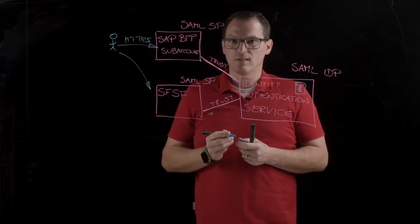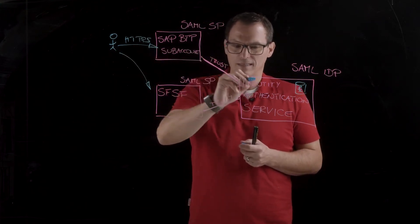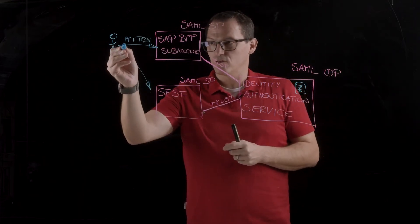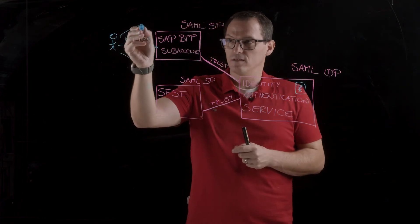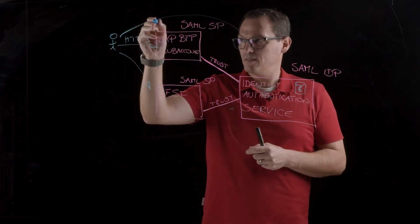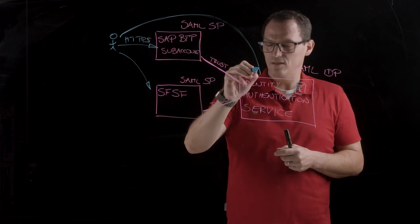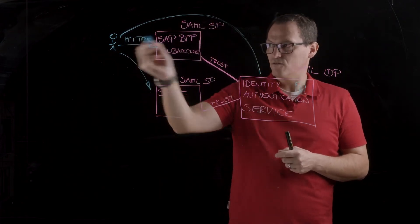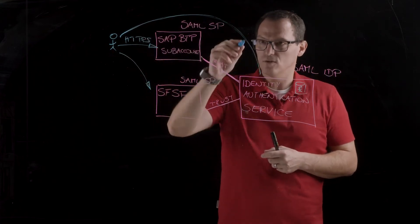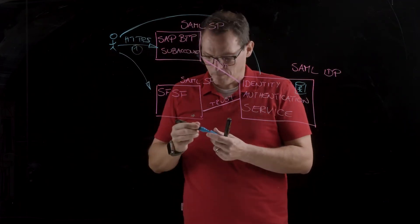And if you access the system, you need to be authenticated. And this authentication is not happening here, but it is delegated to the identity authentication service, so to the identity provider. Therefore, in the first step, you will be redirected to the identity authentication service. So, you have a redirect here, but this is not directly done from the front-end. It is done by the sub-account that you would like to access. So, it redirects you in the first step. So, this is the first one you try to access here.